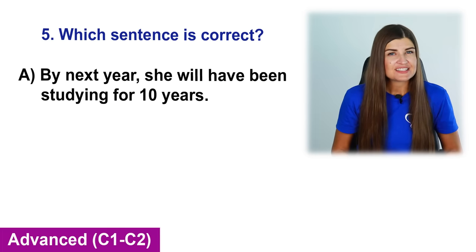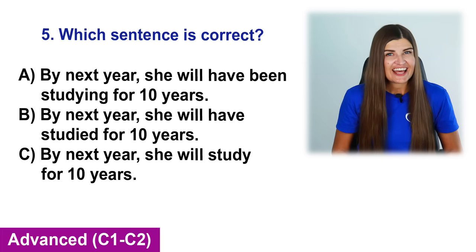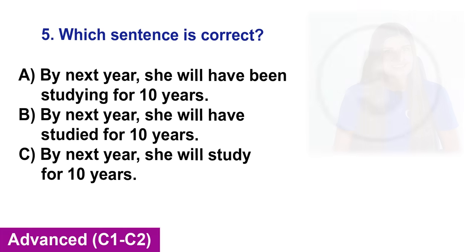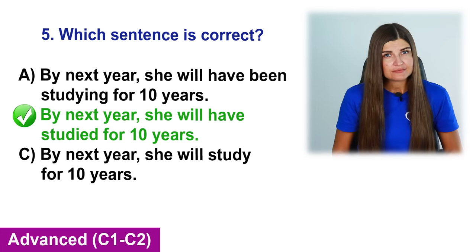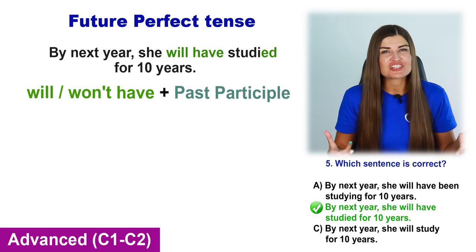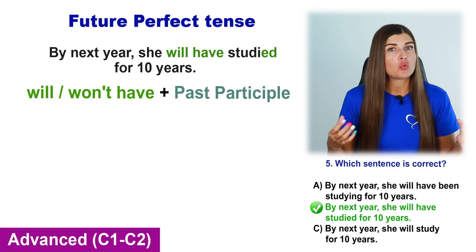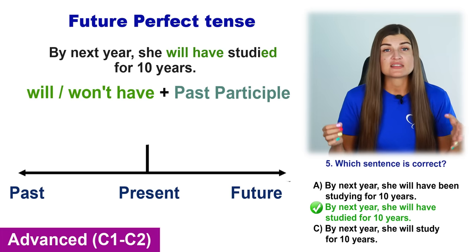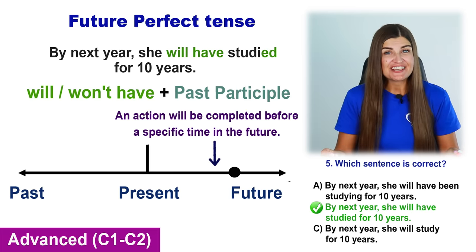Which sentence is correct? A. By next year she will have been studying for 10 years. B. By next year she will have studied for 10 years. C. By next year she will study for 10 years. The correct option is B. The verb have studied is in the future perfect tense, used to describe an action that will be completed in the future. We use the future perfect simple — will or won't have plus past participle — to talk about something that will be completed before a specific time in the future. The phrase by next year specifies when the action will be completed.